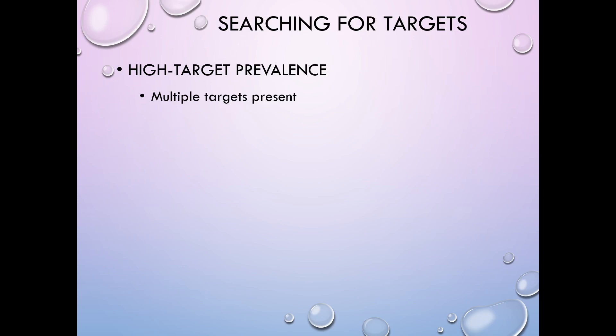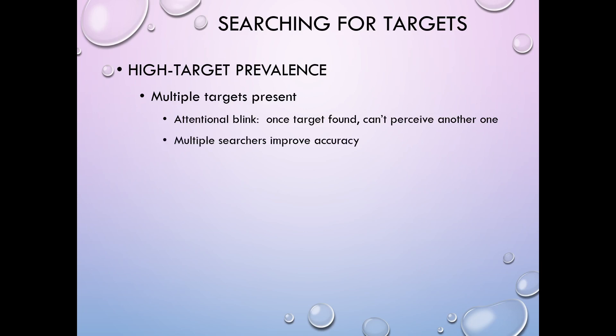When there's high target prevalence, there are multiple targets present. As you're searching for another instance of the target, you may experience what's called an attentional blink — once you've found one target, you have difficulty seeing the next one. You can't shift and perceive that quickly; there's a brief celebratory moment where you cannot shift to searching again. So one of the best things you can do in a high target prevalence situation is have multiple searchers, so that one who has found something can still be processing it while hopefully the next searcher sees the following target.